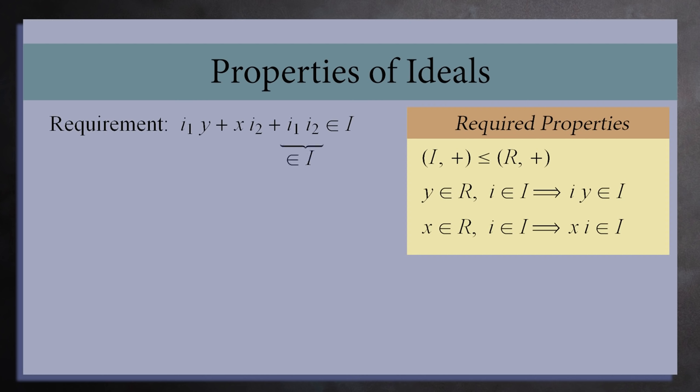Additionally, this shows that the product of any two elements in I is also in I. That is, I is closed under multiplication. All three terms are in I. So we are actually done building our definition of an ideal I.